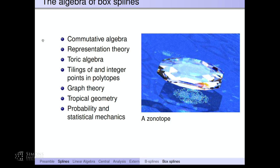As I had mentioned already, surprisingly that very modest object, which is nothing but the Minkowski sum of segments, begins to emerge and begins to connect with many different fields of mathematics. It is connected with representation theory, it is connected with Tutte algebra; we can do various things with zonotopes, like their tilings; we can count integer points in zonotopes efficiently; and we can connect all this machinery with graph theory and various other things. There are also connections with tropical geometry and with various models of probability and statistical mechanics, which I will speak about a little bit today.